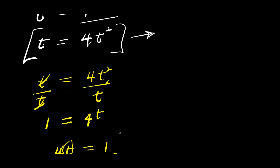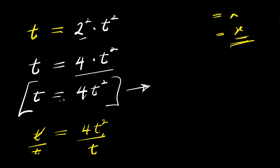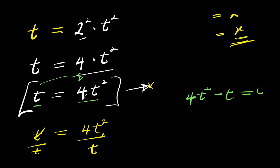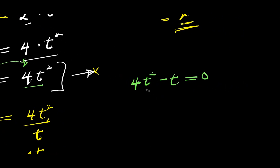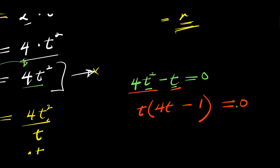Now this is one way of solving it. I can also solve this same problem using another method. If t equals 4t squared, I can move this t over here — that means I have 4t squared minus t equals 0. There is t in both terms, so I can factor out t: I will have t times 4t minus 1 equals 0.